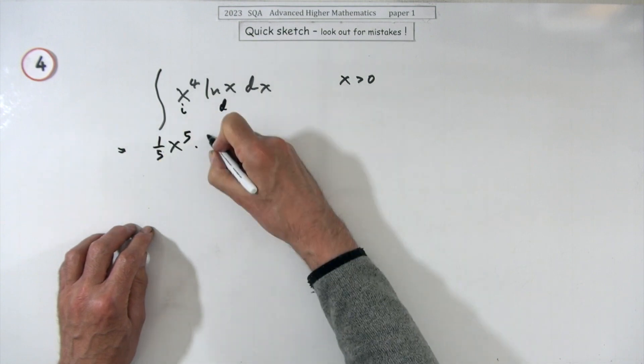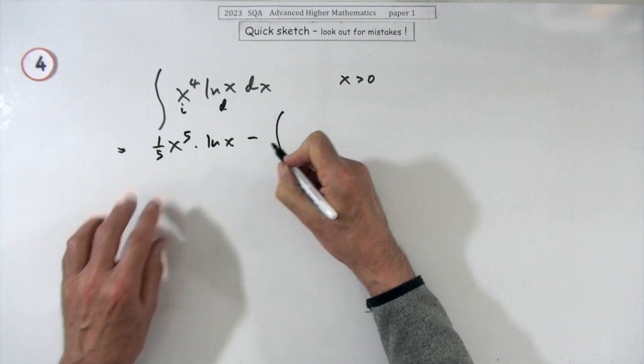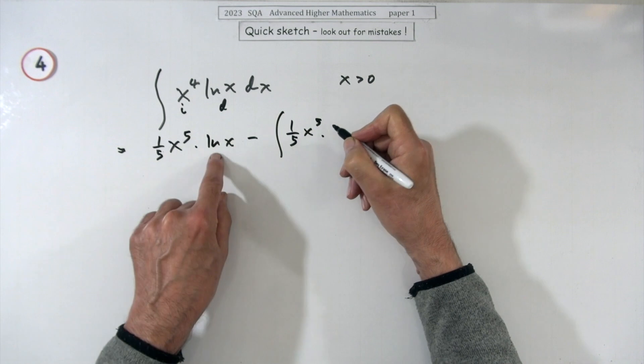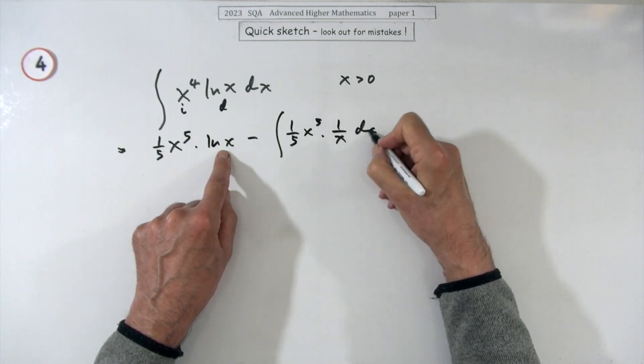Integrate first: integrating that would be x to the five divided by five, leave that alone ln x, minus carry that through in its entirety. The handy thing is when you differentiate that, it just becomes one over x.